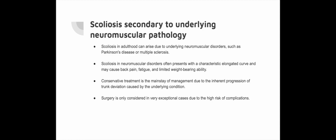Scoliosis secondary to underlying neuromuscular pathology is frequently associated with conditions such as Parkinson's disease and multiple sclerosis, which can trigger scoliosis in a previously healthy spine. Patients typically experience back pain, fatigue and reduced ability to bear weight. The characteristic elongated curve can be identified through radiological imaging. Treatment is primarily conservative due to the inherent progression of trunk deviation caused by the underlying disorder. Surgery has complications and is only used in very exceptional cases.